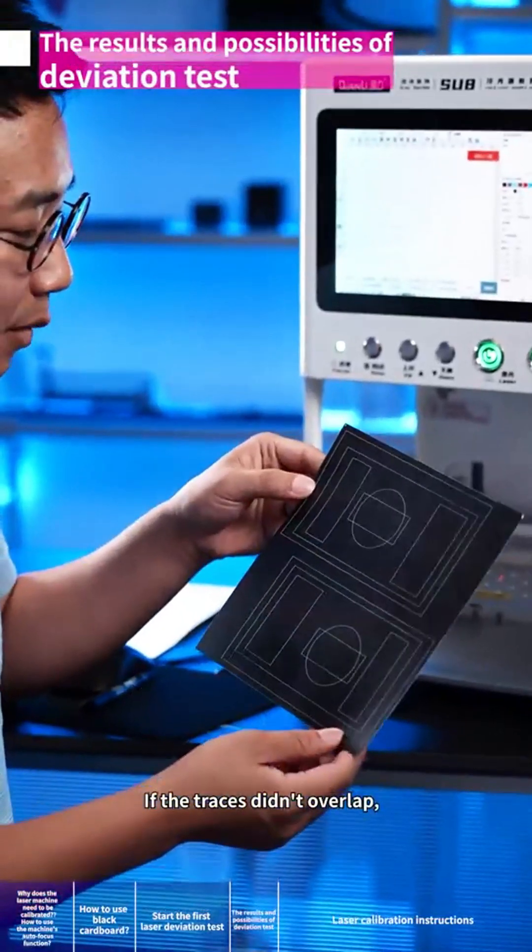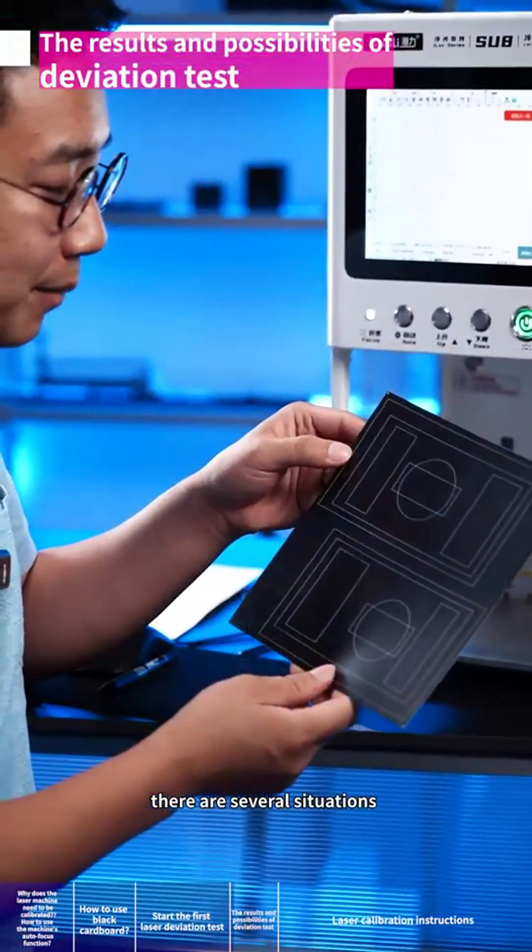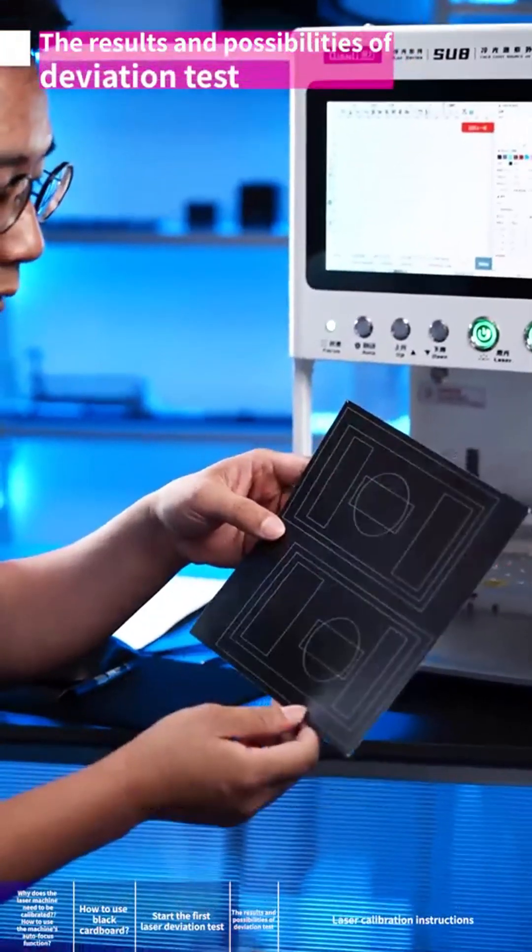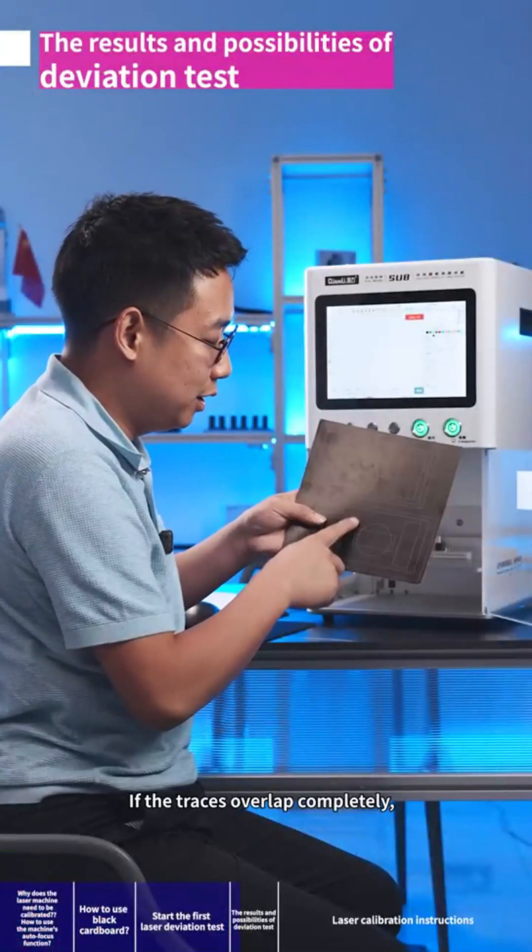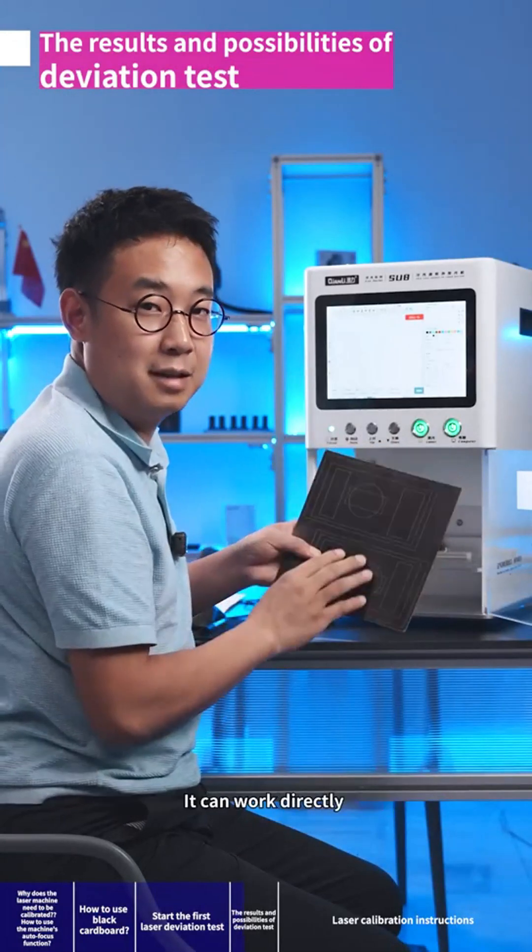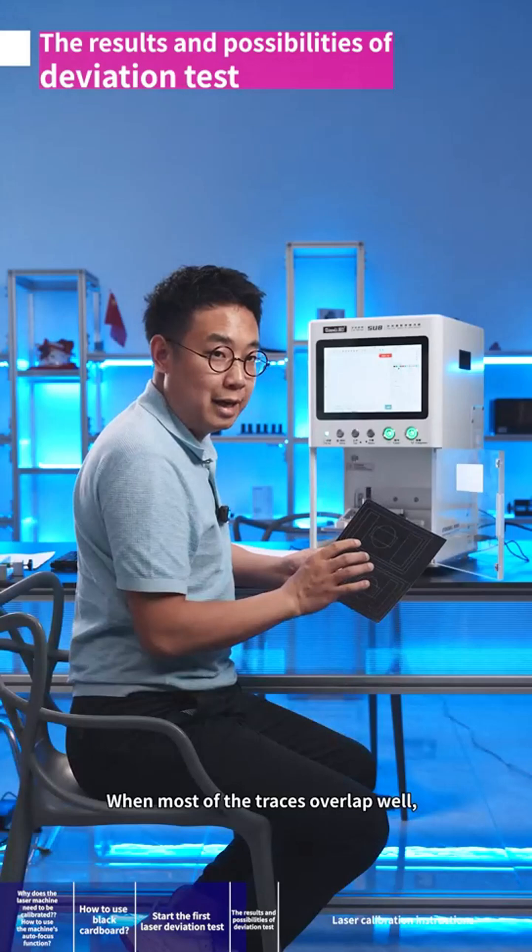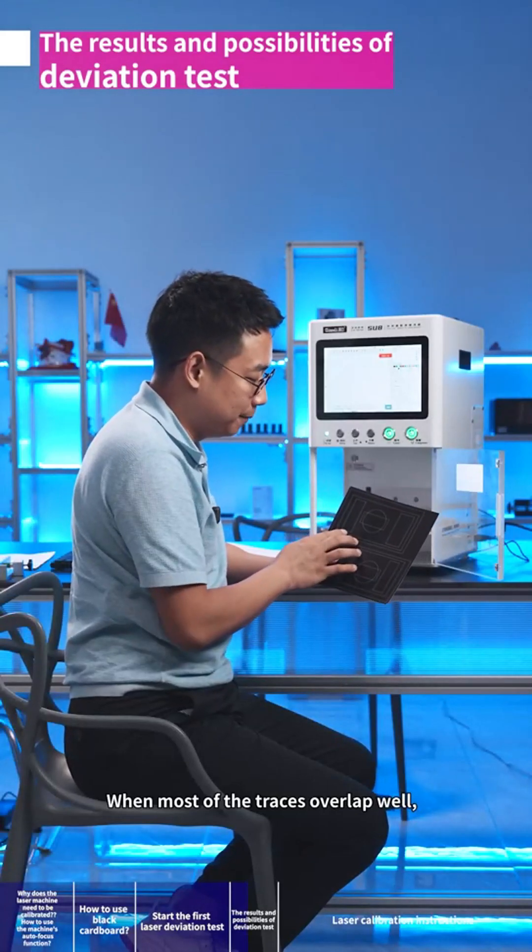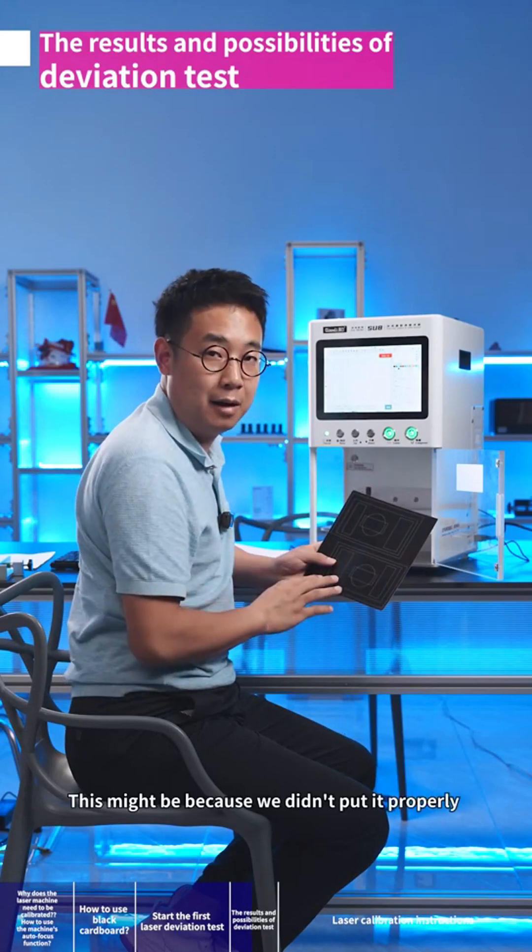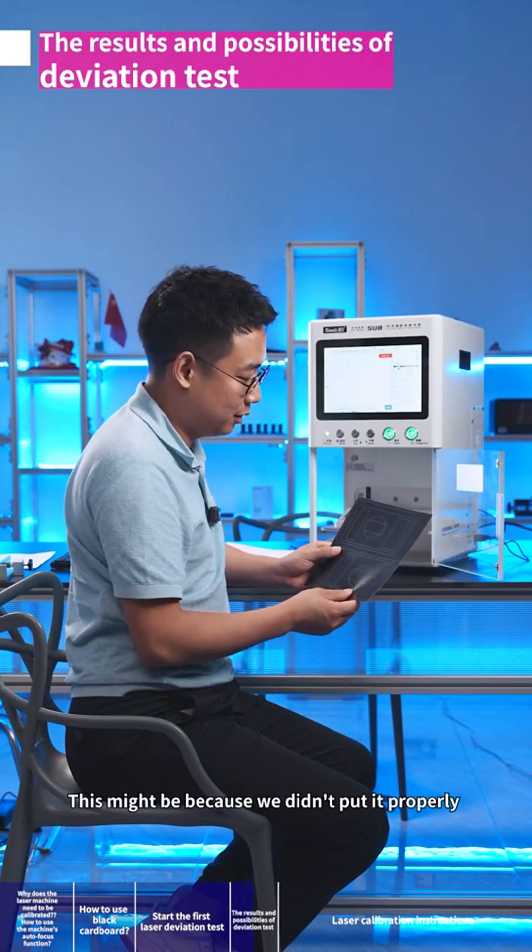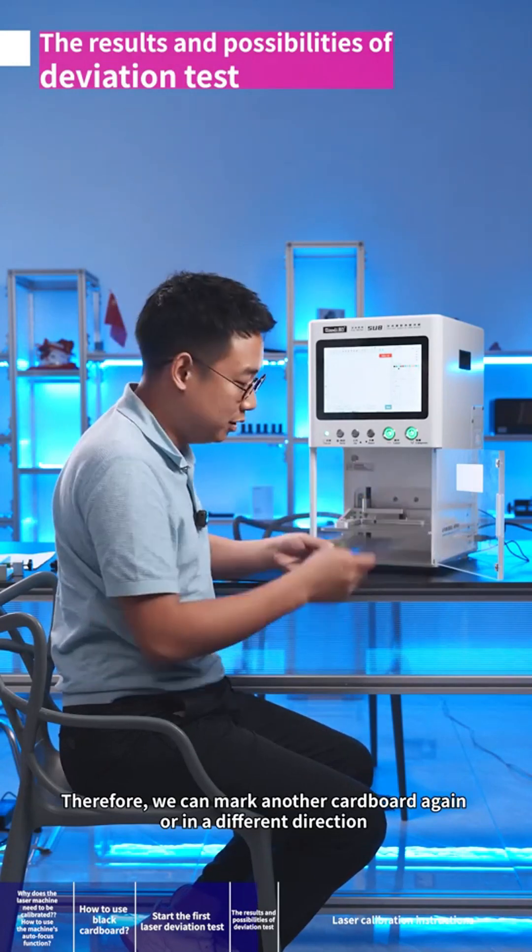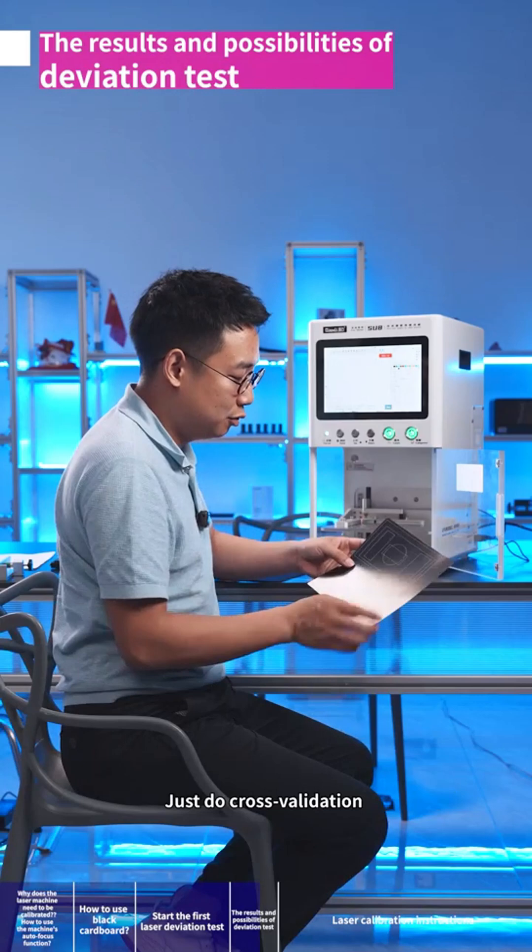If the traces didn't overlap, there are several situations. You can adjust the machine according to the situation you met. If the traces overlap completely, that means the machine is good and normal - it can work directly. When most of the traces overlap well but some edges and corners are not, this might be because we didn't put it properly. Therefore, we can mark another cardboard again or in a different direction. Just do cross-validation.